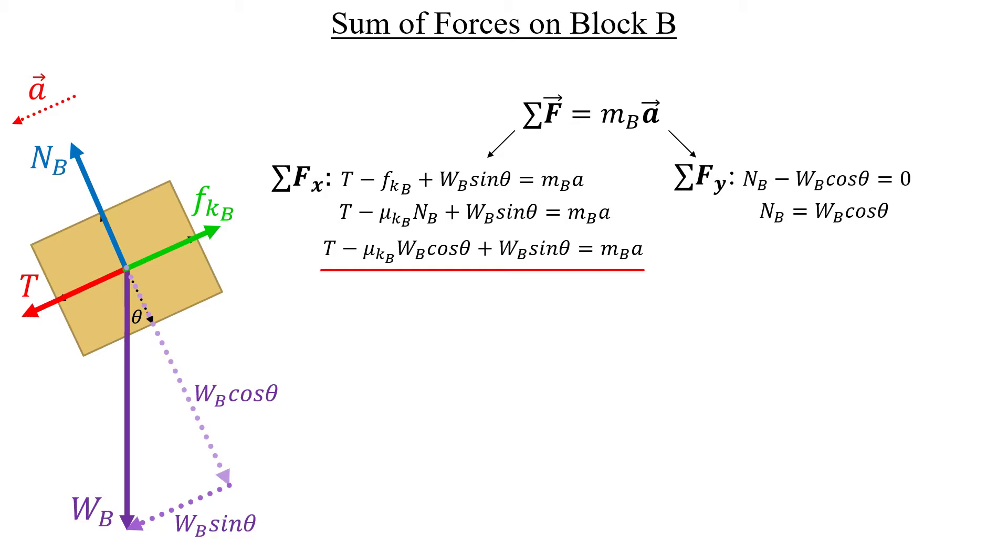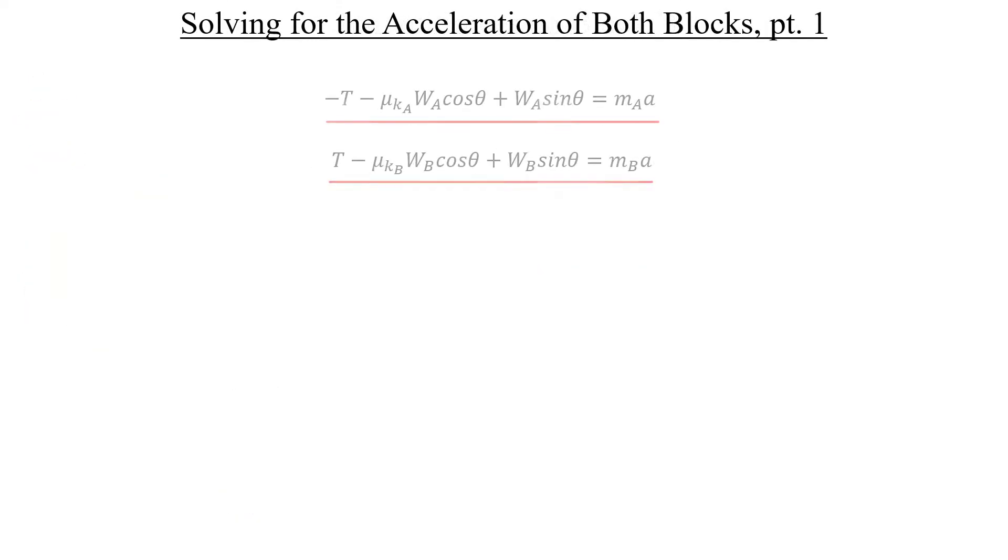We'll underline this expression. And now let's grab both of our underlined expressions, bring them together, and utilize a trick to eliminate the tension and solve for the acceleration of both blocks. Here's our expressions. And to eliminate tension, here's what we're going to do. We're going to take both sides of the left-hand parts of these equations and add them together. And we're going to take both of the right-hand sides of these equations and add them together. Now with that, we don't actually need the parentheses anymore.